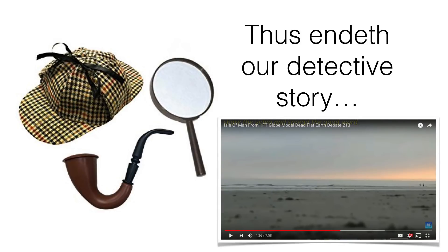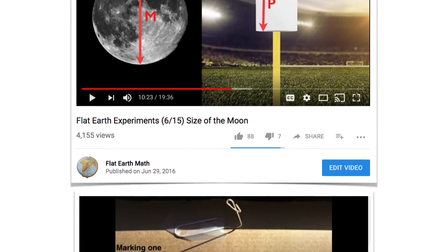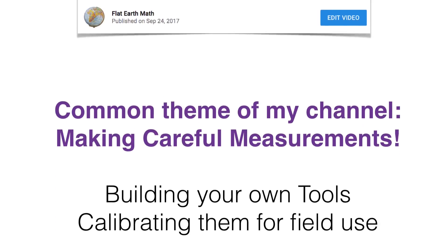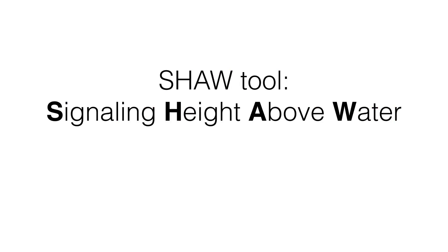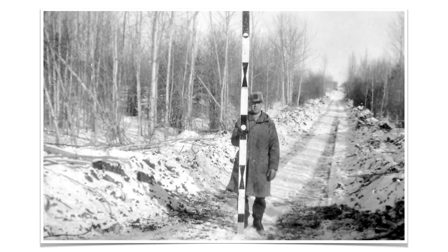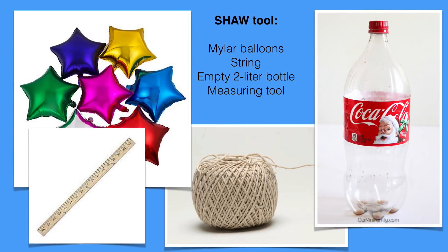That ends our detective story, but there's more. Anybody familiar with my channel knows I'm all about tools - calibrating them, using them in a rigorous manner, making careful measurements, not just casually slapping things together. So I'm going to introduce the SHAW tool: Signaling Height Above the Water. Why 'signaling'? All my other tools you hold in your hands, but this tool you're going to use to signal from a distance. Like surveyors who use telescopes to focus in on each other - this one you can measure in actual feet and inches with carefully calibrated colored bands.